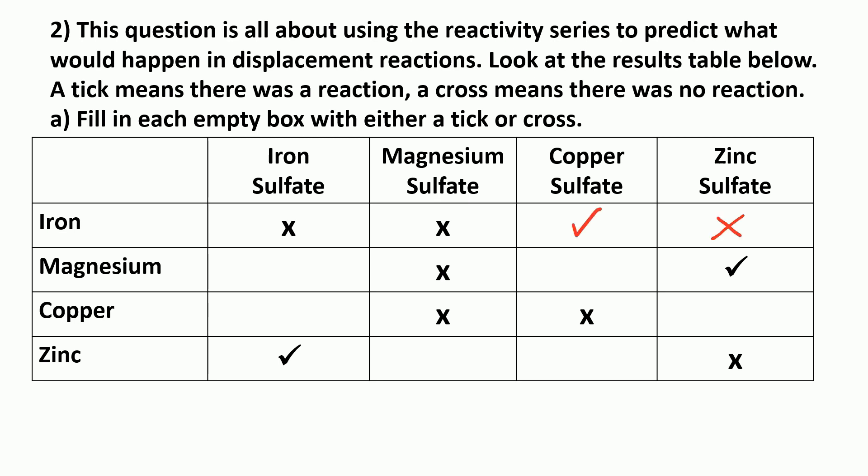Then magnesium and iron sulfate. Magnesium is more reactive than iron, so it can displace iron and take the sulfate from it. Magnesium is also more reactive than copper, so you'd get a reaction between magnesium and copper sulfate.